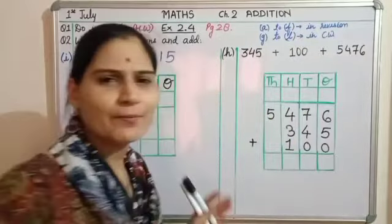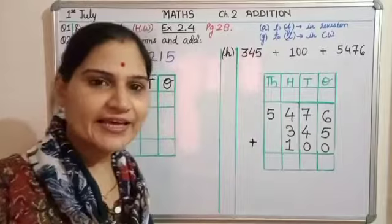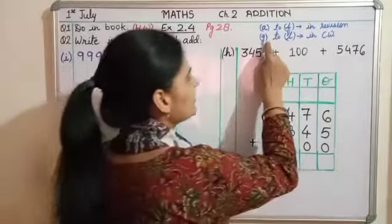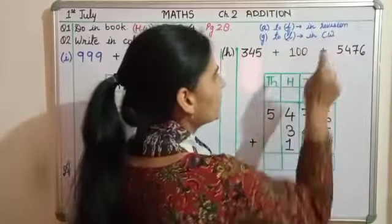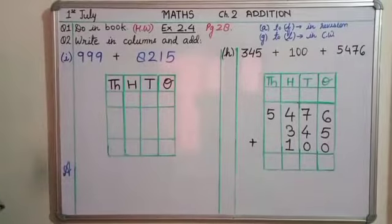Question number 2 we have to do in the notebook. In that there are 12 parts. So we will do 6 parts in revision and 6 parts now in the classwork notebook. First 6 parts a, b, c, d, e, f - these we can do in revision. You can also do it now in your rough copy for revision.